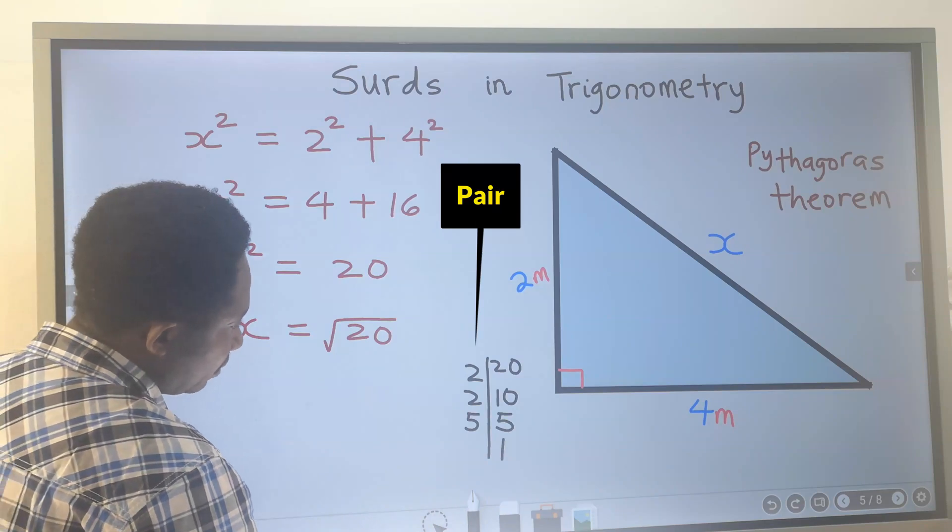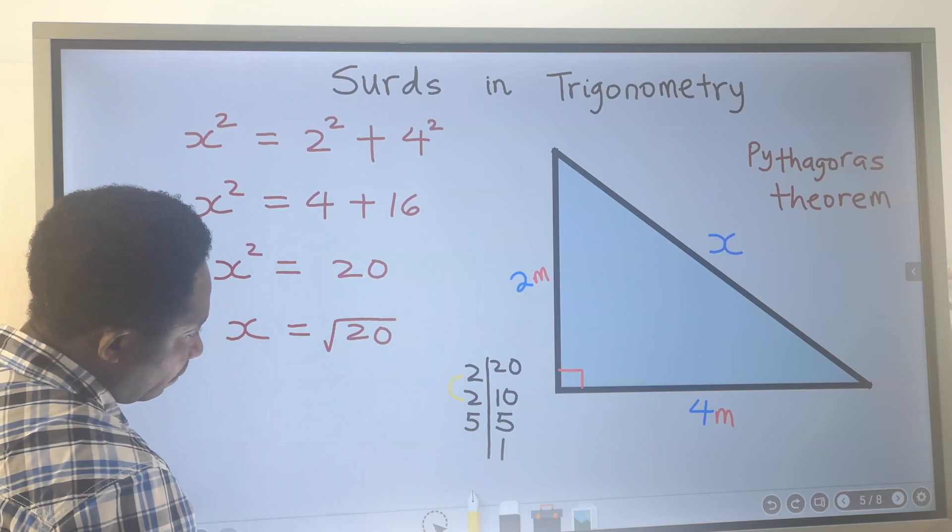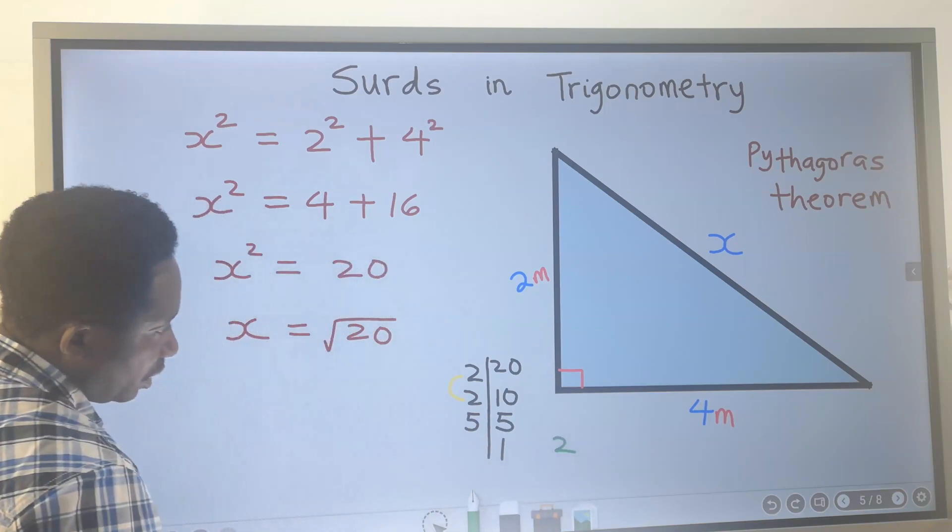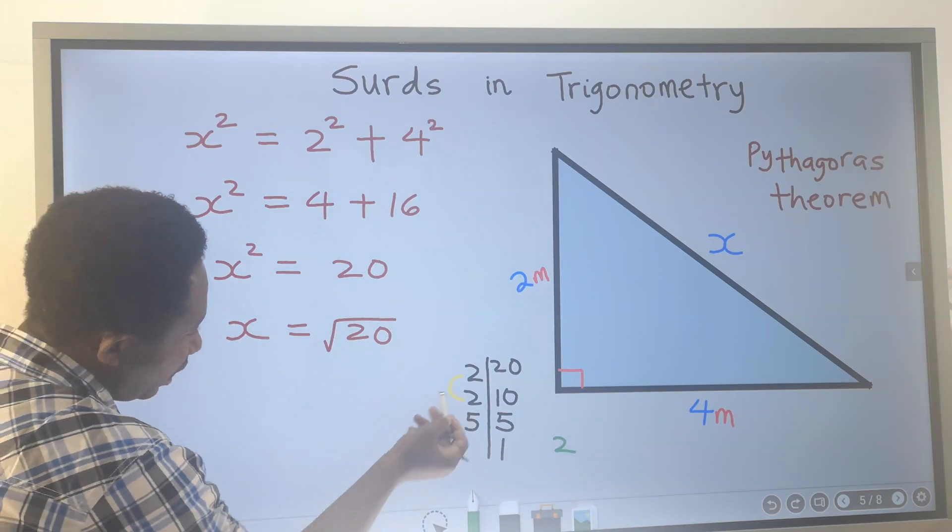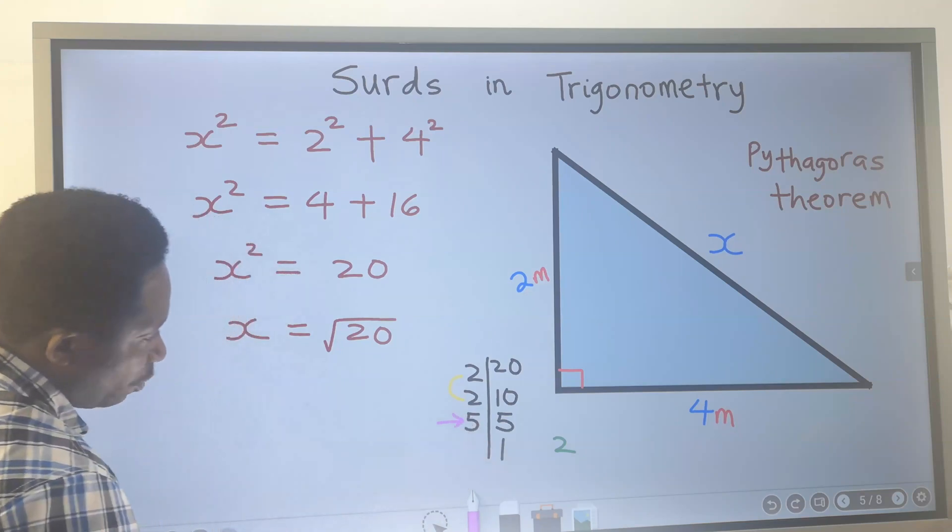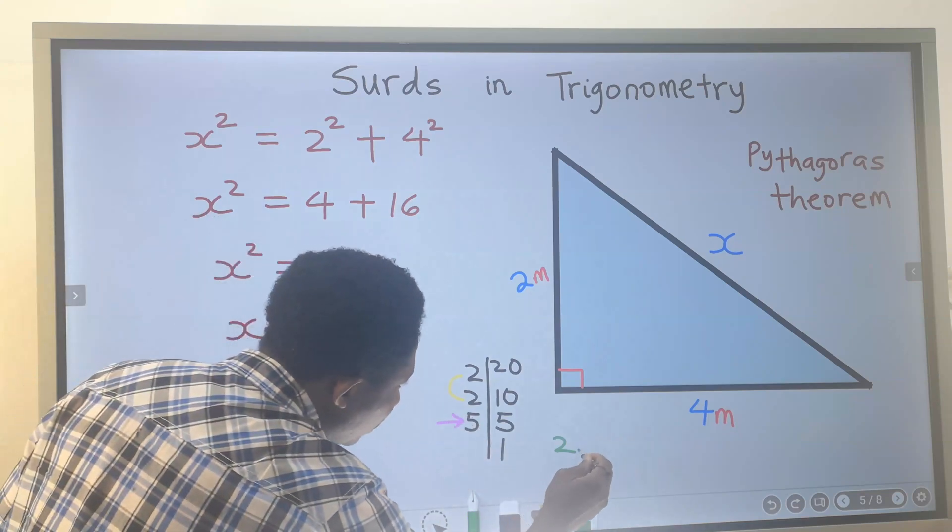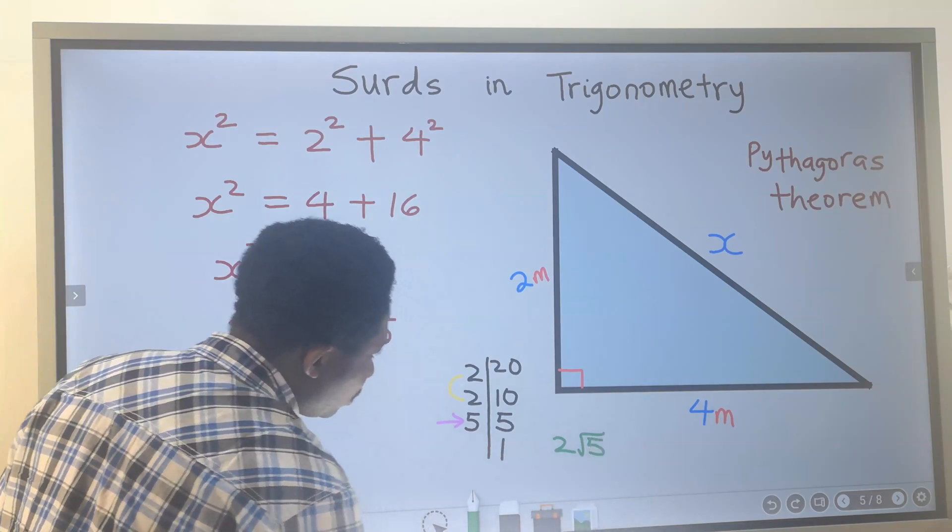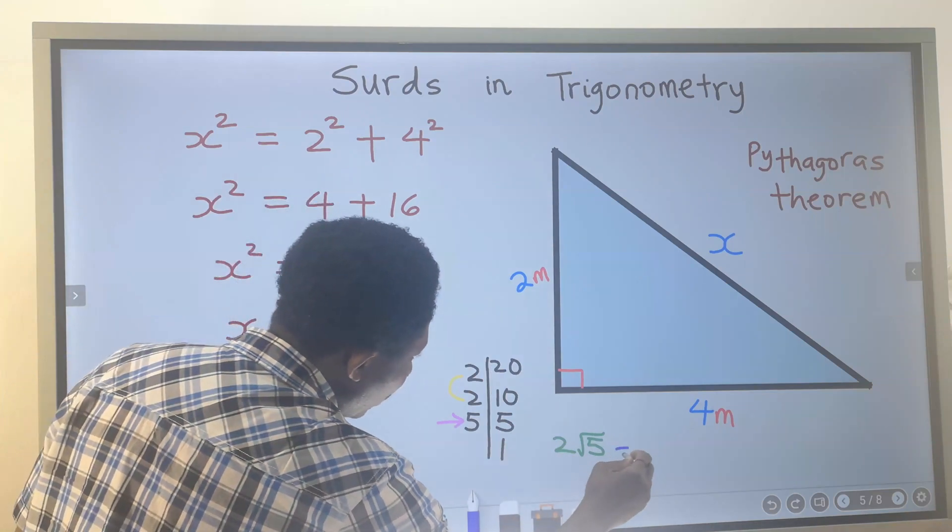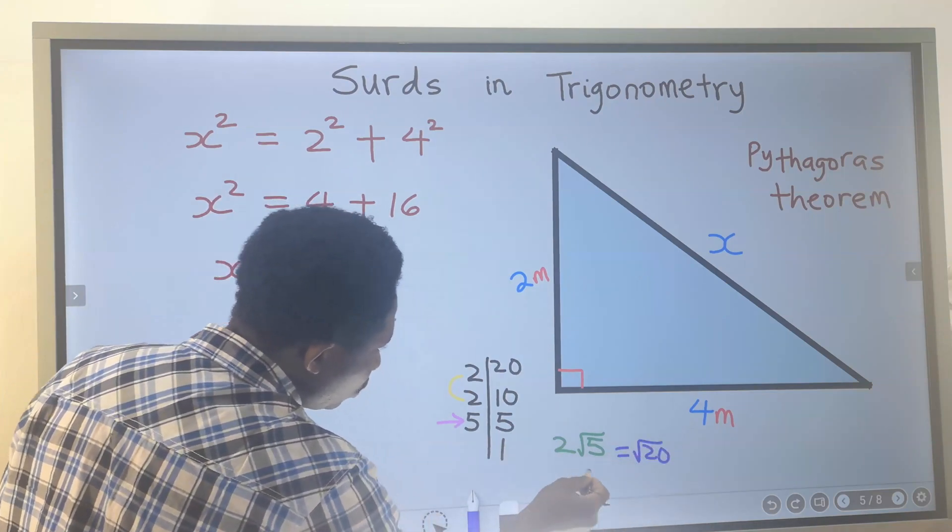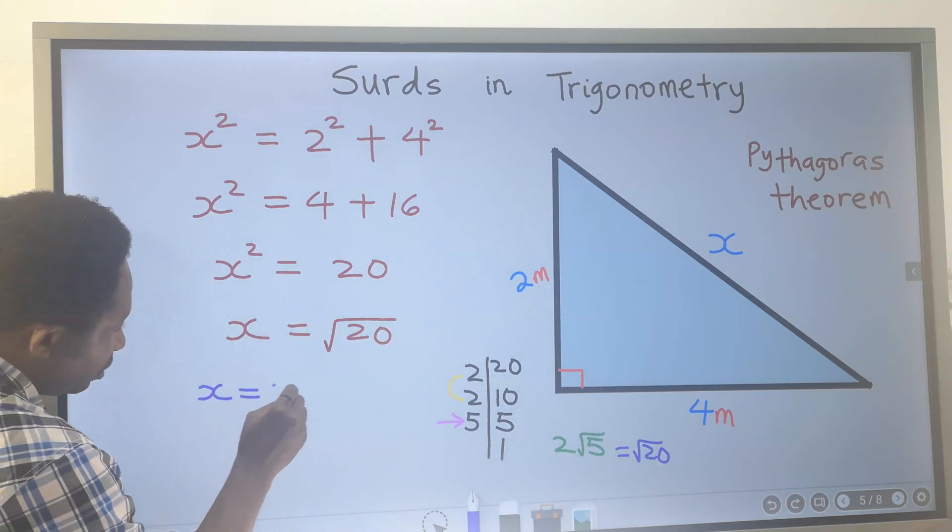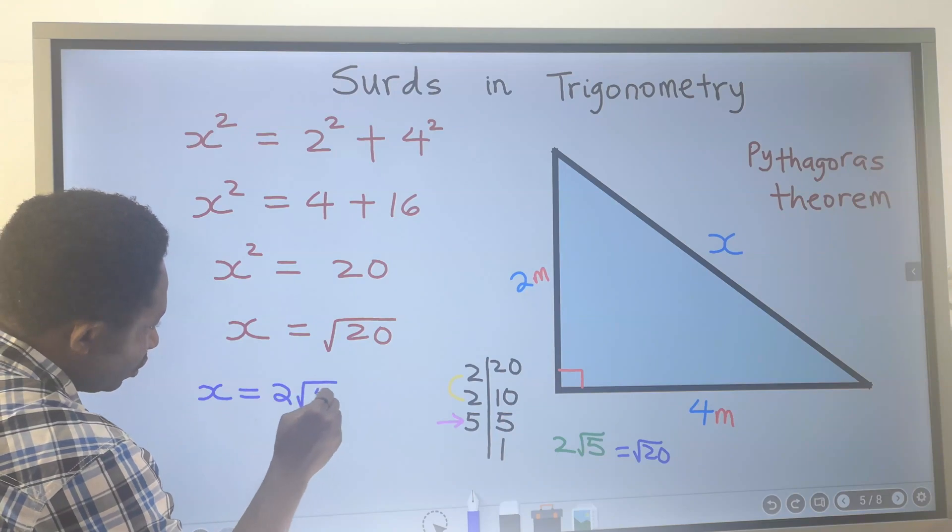Next, we are going to pair. 2 got a pair, and here we are going to write these 2 out. Because 2 here is free. However, these 5 got no pair. We are going to put these 5 inside the square root. That means the square root of 20 is the same thing as 2 root 5. Hence, our x becomes 2 the square root of 5.